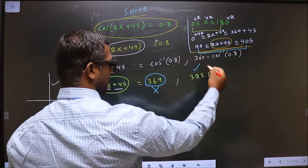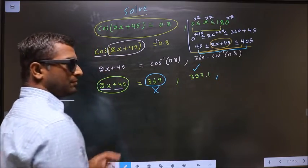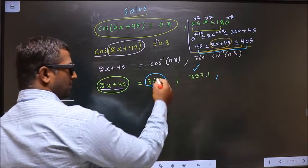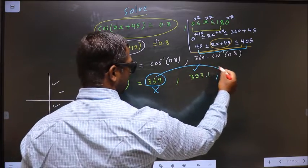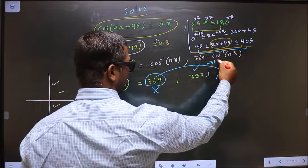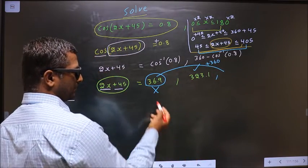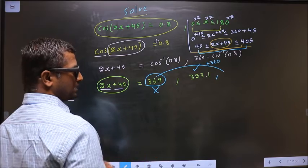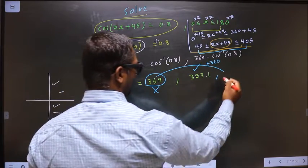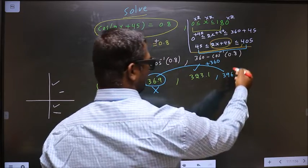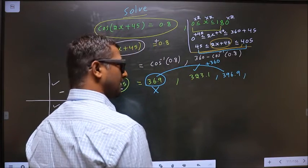Does this lie in the interval? Yes, so you accept it. Now let us find other angles by adding 360 to this. If I add 360 degrees, what will I get? 36.9 + 360, you get 396.9. Does this lie in the interval? Yes, so accepted.